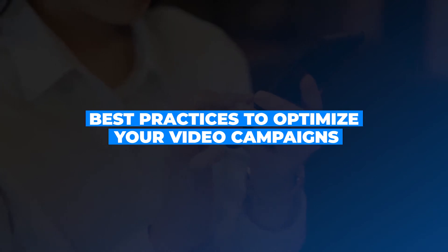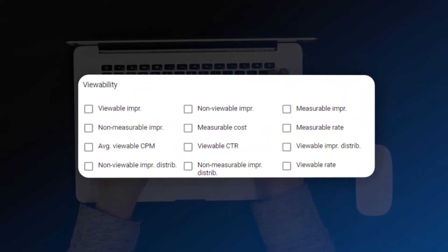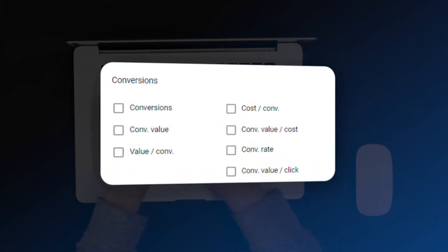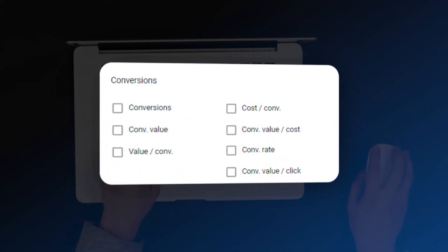Best practices to optimize your video campaign. While optimizing your video campaign, you need to consider your main goals, as these will clue you on what metrics you should be looking for to evaluate performance. For example, if your main goal is increasing brand awareness, the most relevant KPIs related to viewability should be analyzed. On the other hand, if you are looking to increase leads for online purchases, you should focus on conversion-related metrics.